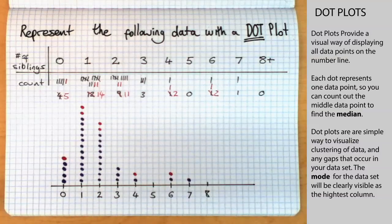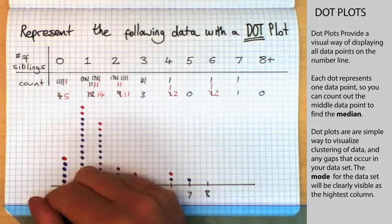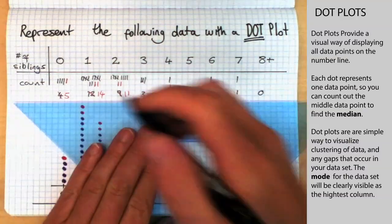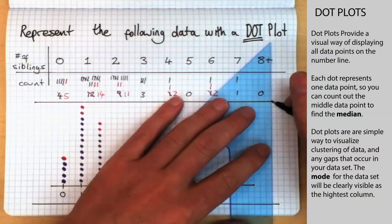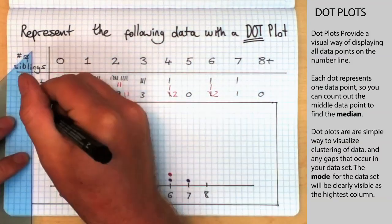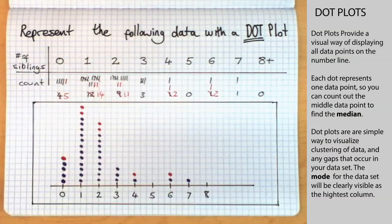So that's how you make a dot plot. It's a nice, simple way to describe your data. You can see the shape of the data and the spread of the data. And that's it. Thank you.